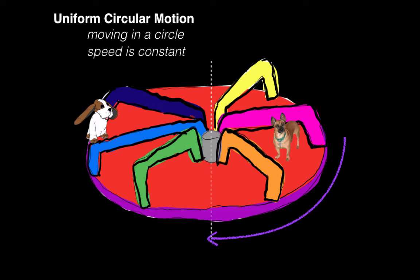Looking at this scene, you may or may not have some intuition about which dog would experience a more intense ride. By the end of this screencast you should be able to use physics to understand why the ride experience varies depending on how far away from the axis of rotation a rider sits.